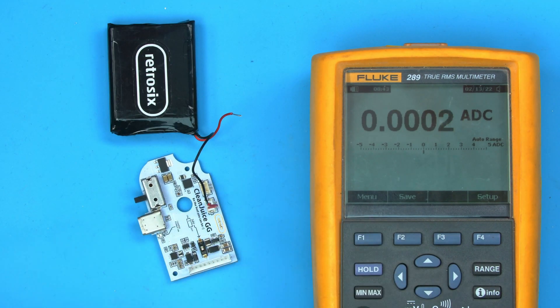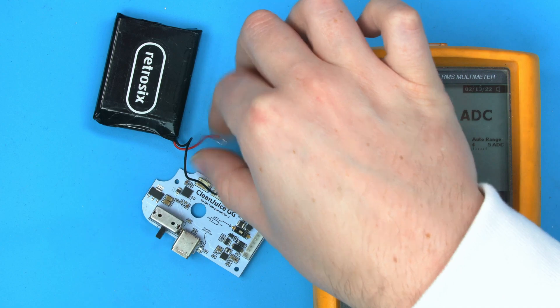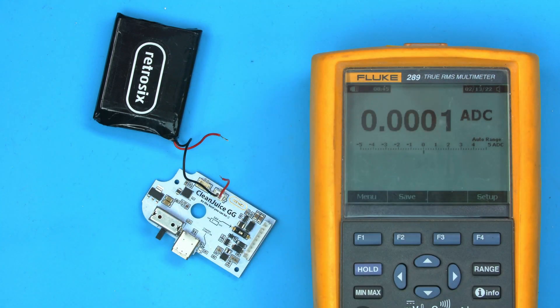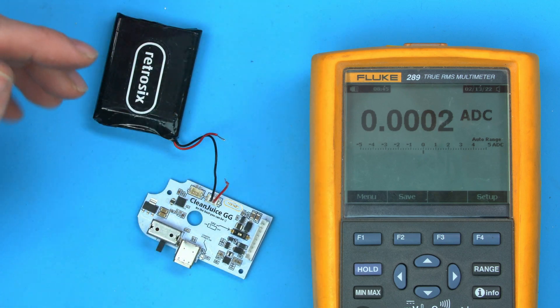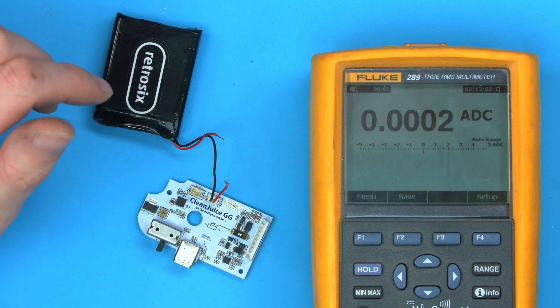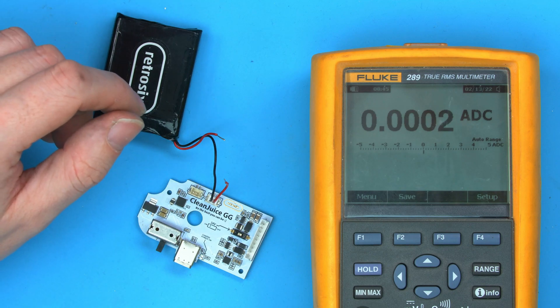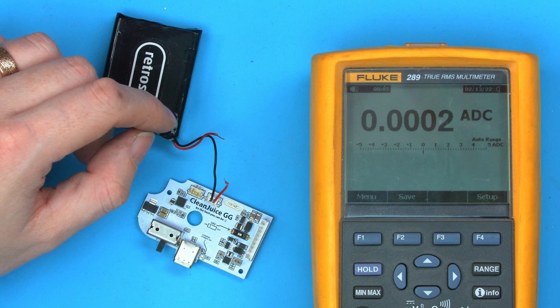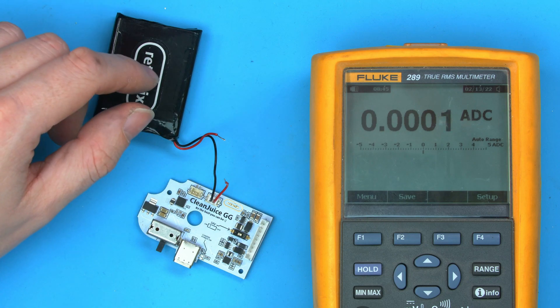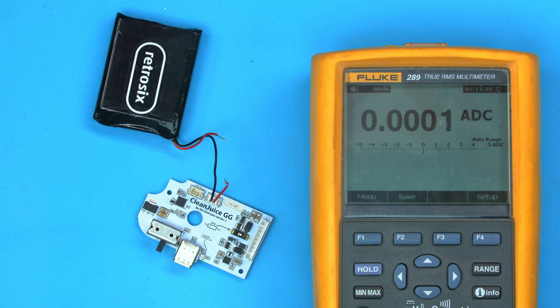Now we know how much this Clean Juice draws when it's turned off and connected. If we want to calculate how long this Clean Juice would last by being connected but not turned on, we first take the battery current. This battery is rated at 3,000 milliamp hours. There's two of them, so that's 6,000 milliamp hours, which means if we were to draw a milliamp permanently with these two batteries connected, it would last 6,000 hours. Now we're drawing 0.04 of a milliamp. If you do 6,000 divided by 0.04, you get 150,000 hours.